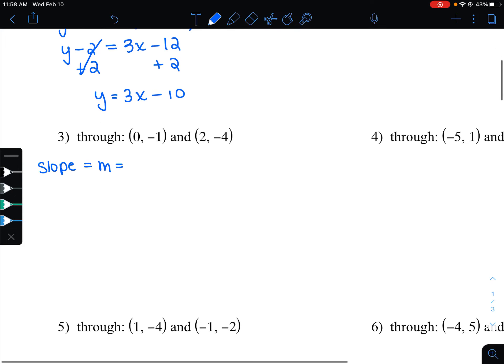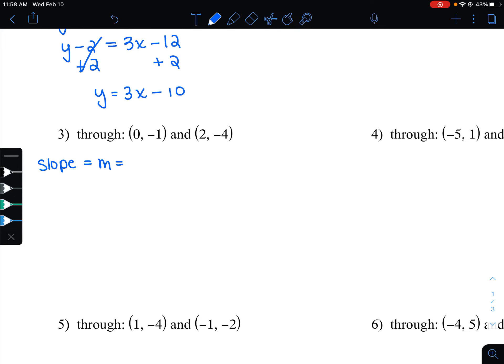Let's try that one more time. So remember, point-slope form is y minus y1 equals mx minus x1. Slope-intercept form is y equals mx plus b. So I'm going to start with point-slope and finish in slope-intercept.